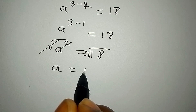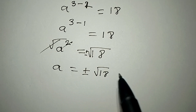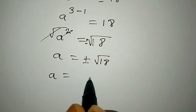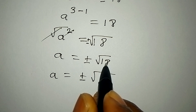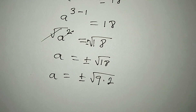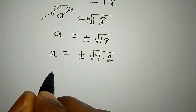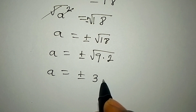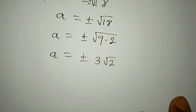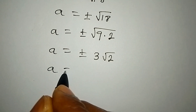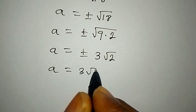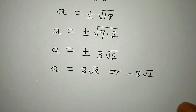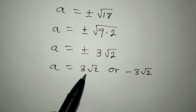So a equals plus or minus the square root of 18. We can break 18 down: 18 is 9 multiplied by 2, and 9 is a perfect square. So a equals plus or minus the square root of 9 times root 2, which is plus or minus 3 root 2. So a equals 3√2 or negative 3√2.